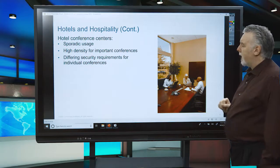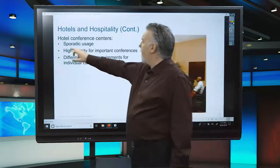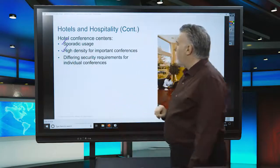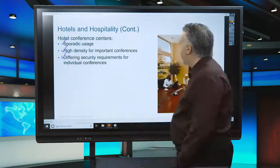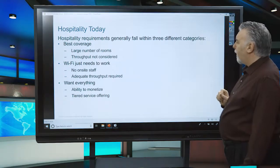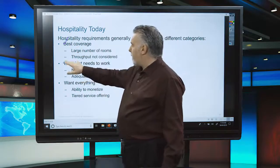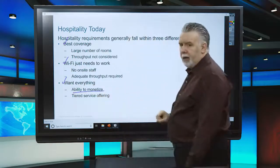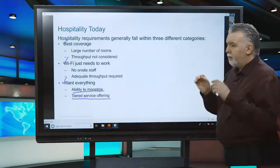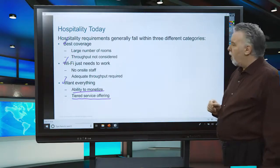Hotel conference centers may have sporadic usage — one day 10 people, the next 300 — becoming high-density very quickly for important conferences, with different security requirements for different events. Hospitality requirements generally fall into three categories: best coverage, Wi-Fi just needs to work, or monetizing everything including Wi-Fi usage. Some hotels offer tiered service: free basic Wi-Fi with silver or platinum tiers at different data or speed caps.